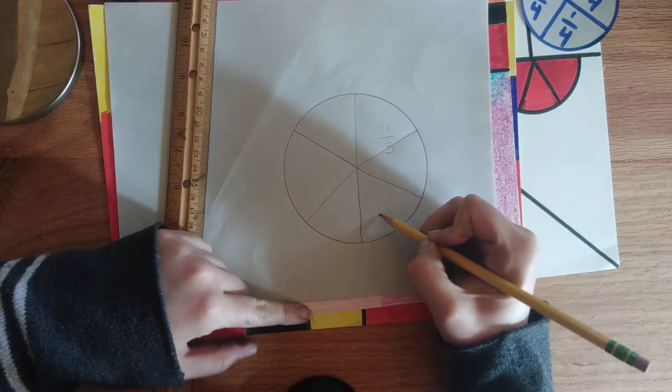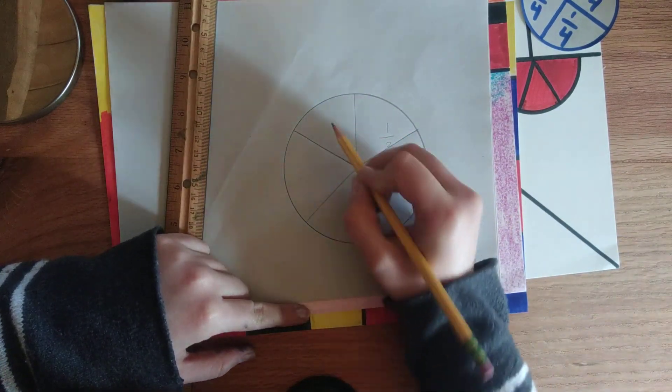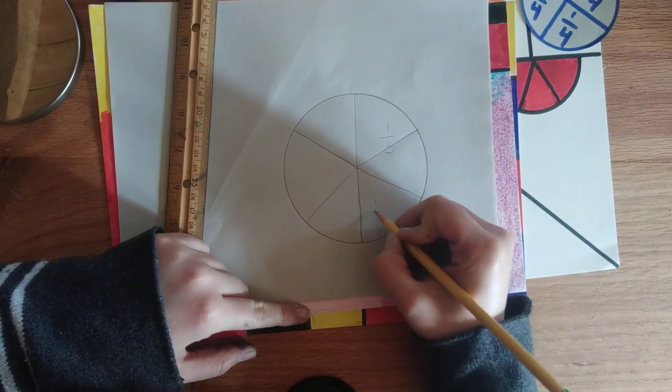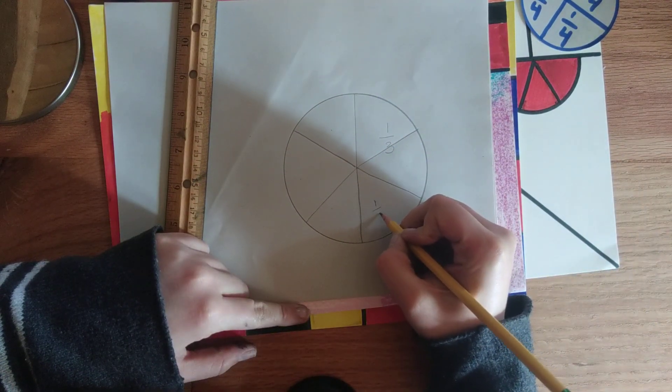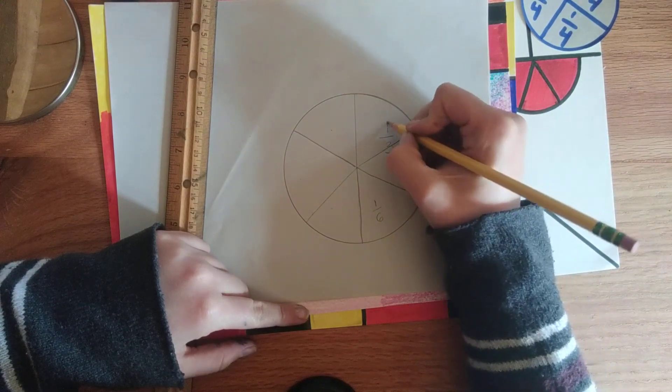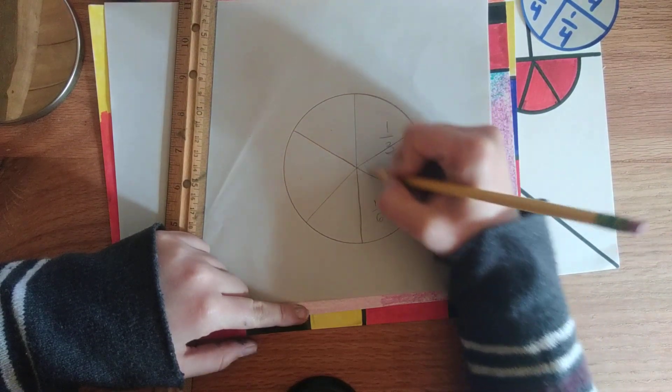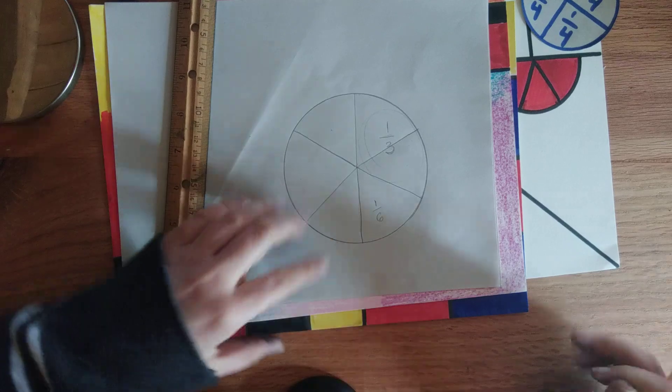Let's count how many parts there are. One, two, three, four, five, six. Now this is one sixth. And then these two sixths together is one third, if you took this whole piece right there.